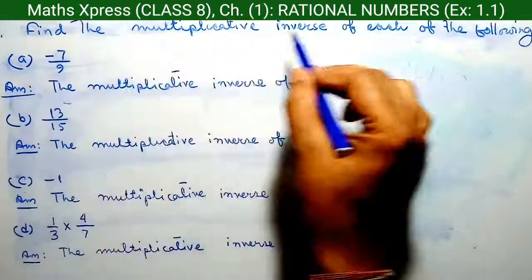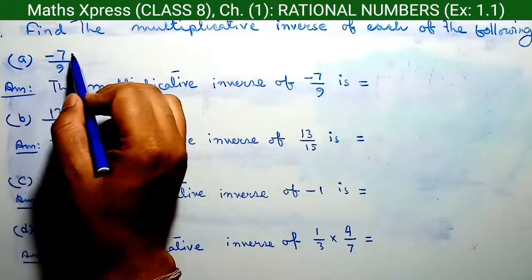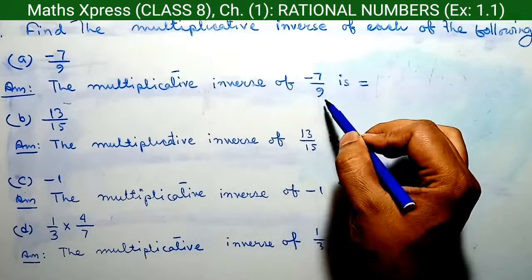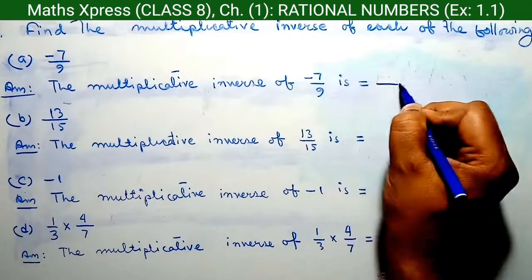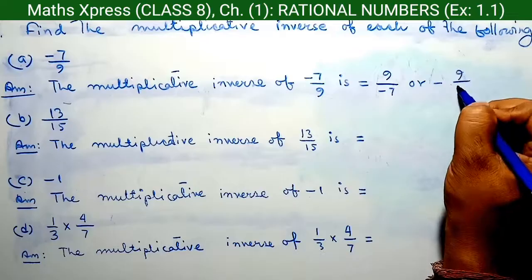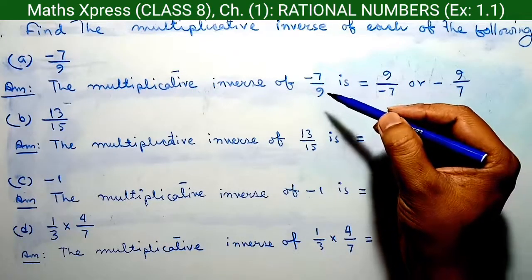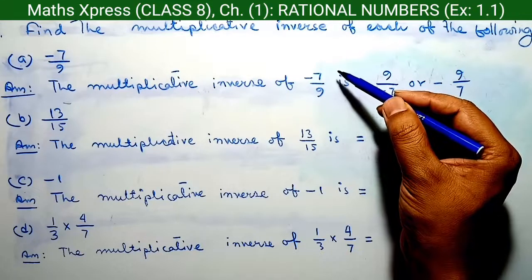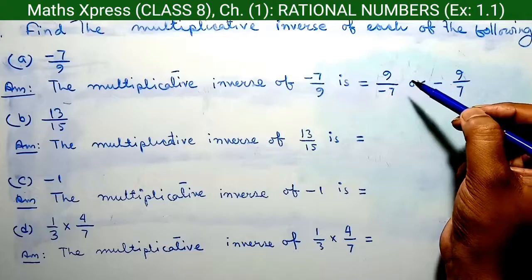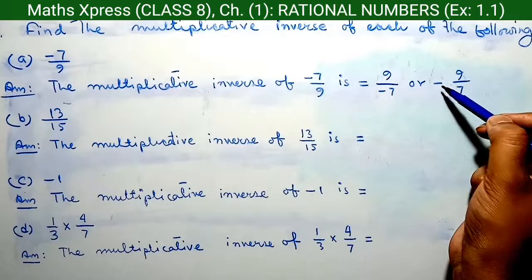Question 2: Find the multiplicative inverse of each of the following. Question A: minus 7 by 9. The multiplicative inverse of minus 7 by 9 is 9 by minus 7, or minus 9 by 7. In this type of question, we write the denominator as the numerator and the numerator as the denominator, but the sign always remains the same. Here a negative sign is present, therefore we write a negative sign.